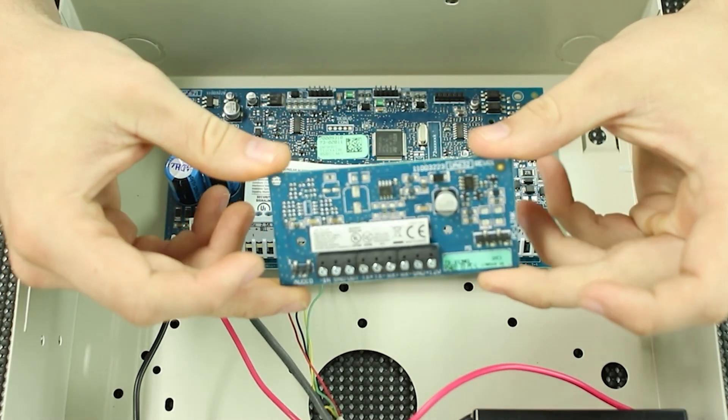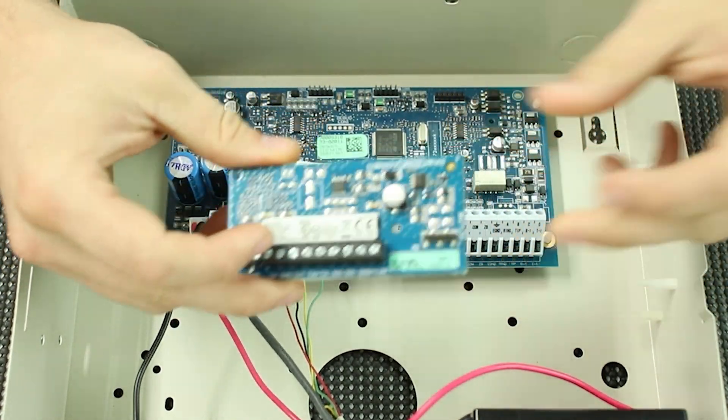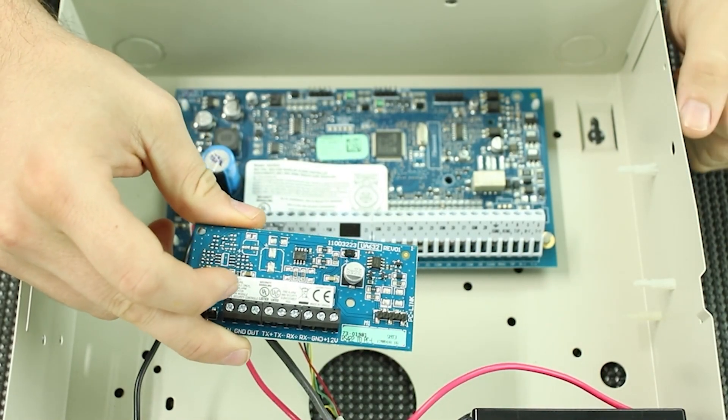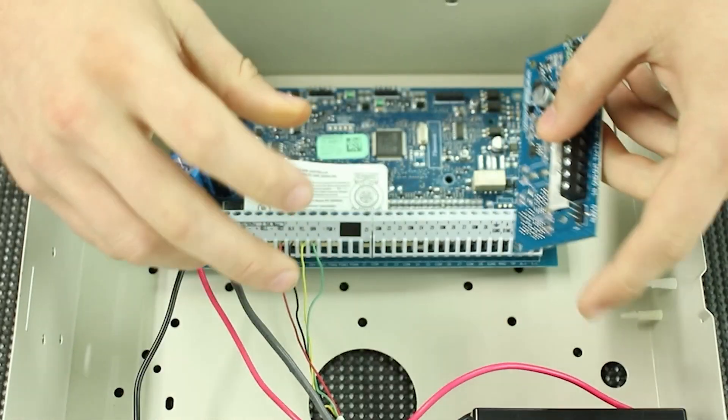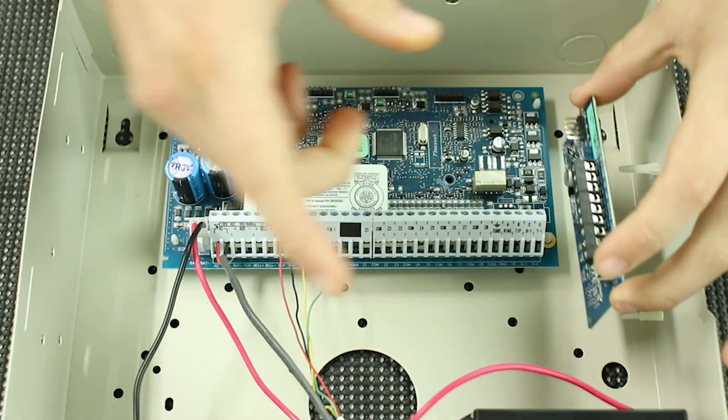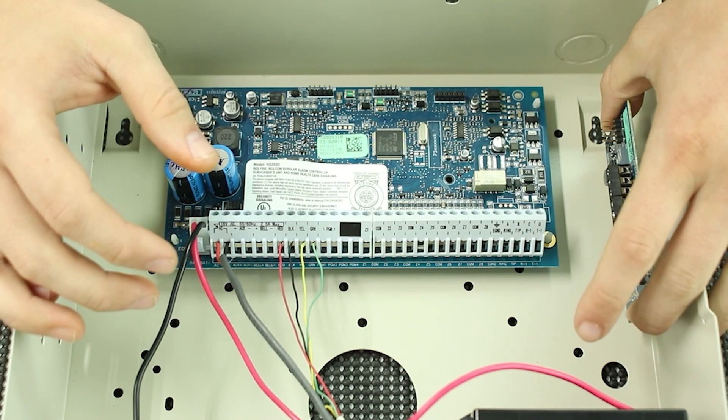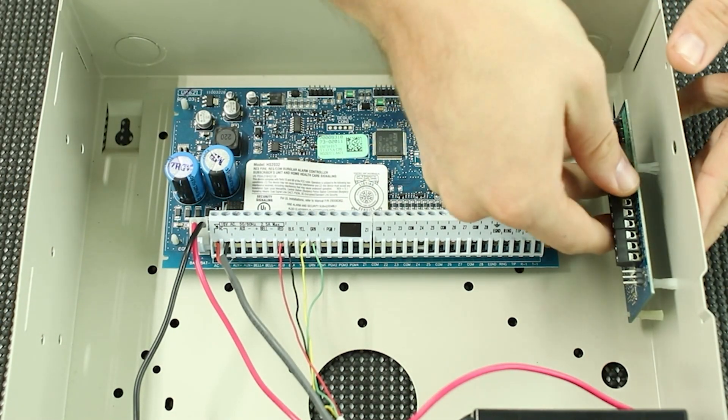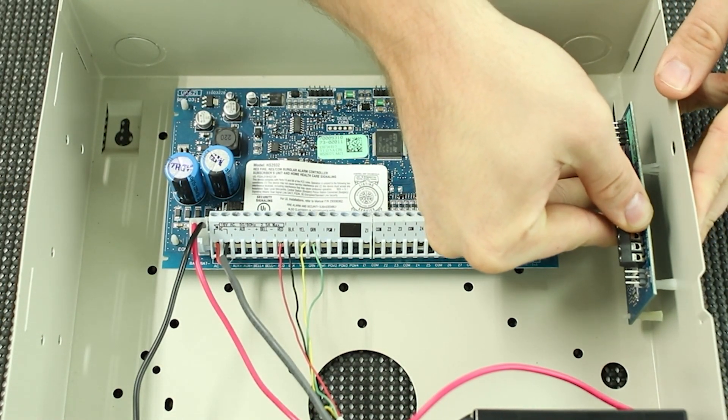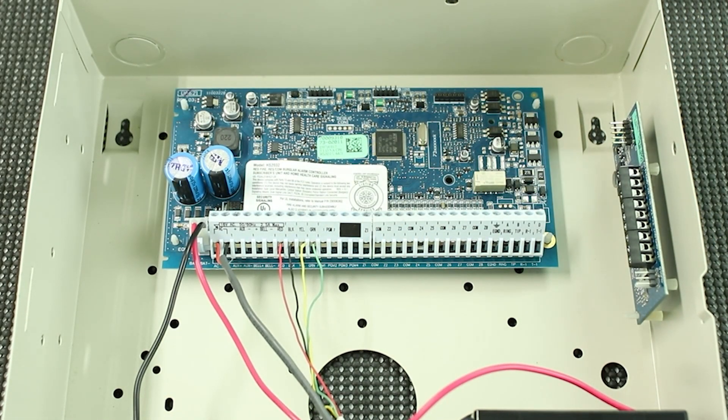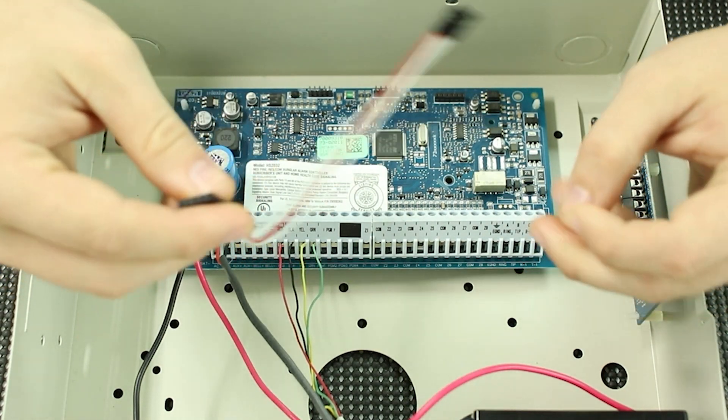All right guys, we are here at the panel. I'm going to show you where to clip this daughter board into using these little standoffs here on the right side of the cabinet as you're looking at it. This is going to sit with the terminals facing outward just like this. In a moment I'm going to pull this back out and show you guys how to wire it up, but for now I wanted to show how to connect to the PC link cable.